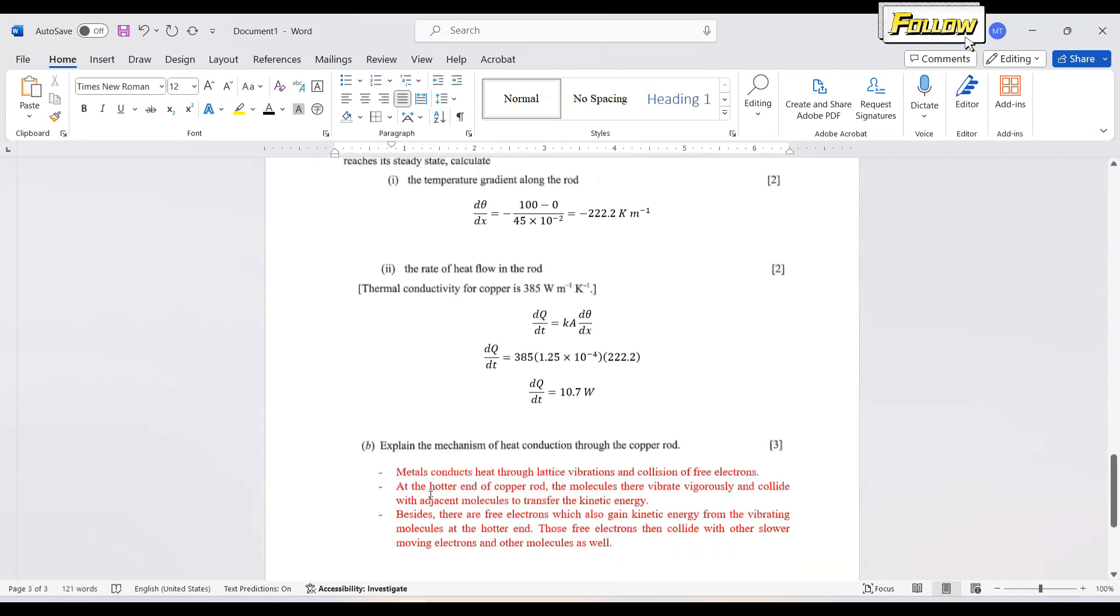And the last question is to explain the mechanism of heat conduction through the copper rod. So copper is a metal. So we know that metal conducts heat through two methods. First is the lattice vibration. Next is the collision of free electrons. So for non-metal objects, it only conducts heat through the lattice vibration. So here I think we need to mention both of them since it is a metal.